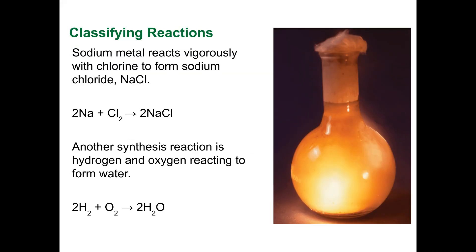Sodium metal reacts vigorously with chlorine to form sodium chloride. That's how salt's formed. You take two sodium atoms and combine them with two chlorine atoms, and you get two molecules of sodium chloride.